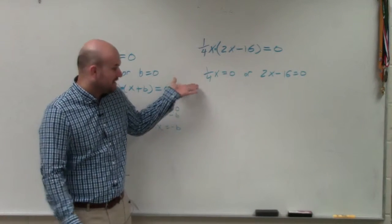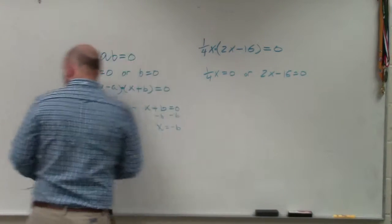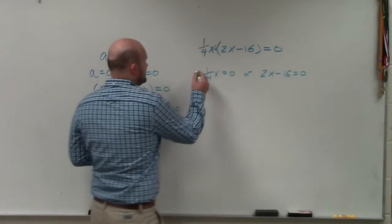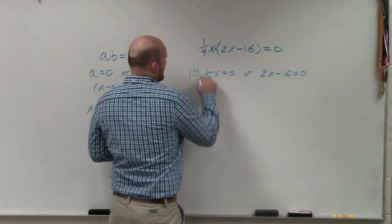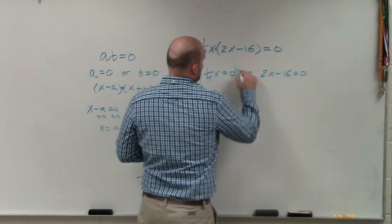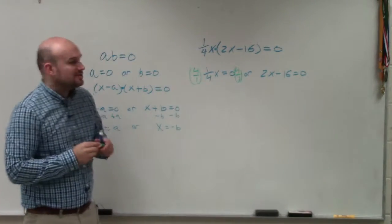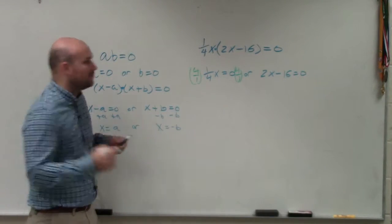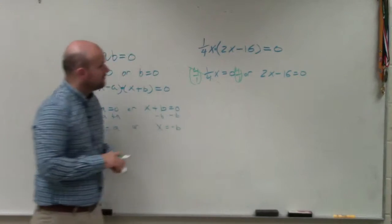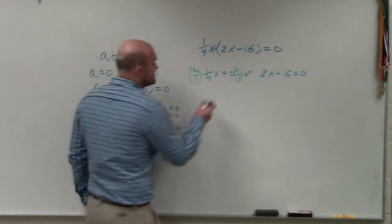To undo a fraction, you would multiply by the reciprocal. It really doesn't matter that much because it's equal to zero, but still, you should remember how to get rid of a fraction. So the reciprocal, 4 over 1 times 1 fourth is just going to go to 1. So therefore, you're left with x. And then anything times 0 is just going to be 0.